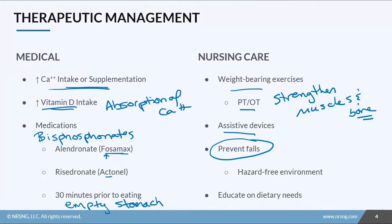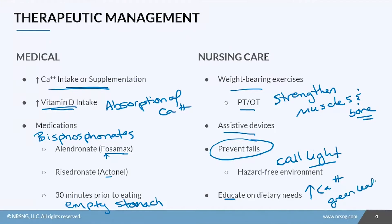Preventing falls is really important. Keep a hazard-free environment, make sure they have their call light within reach, and that their belongings and assistive devices are within reach. We also want to educate them on their dietary needs — milk is not the only source of calcium. They can also get calcium from green leafy vegetables; broccoli and spinach have lots of calcium.